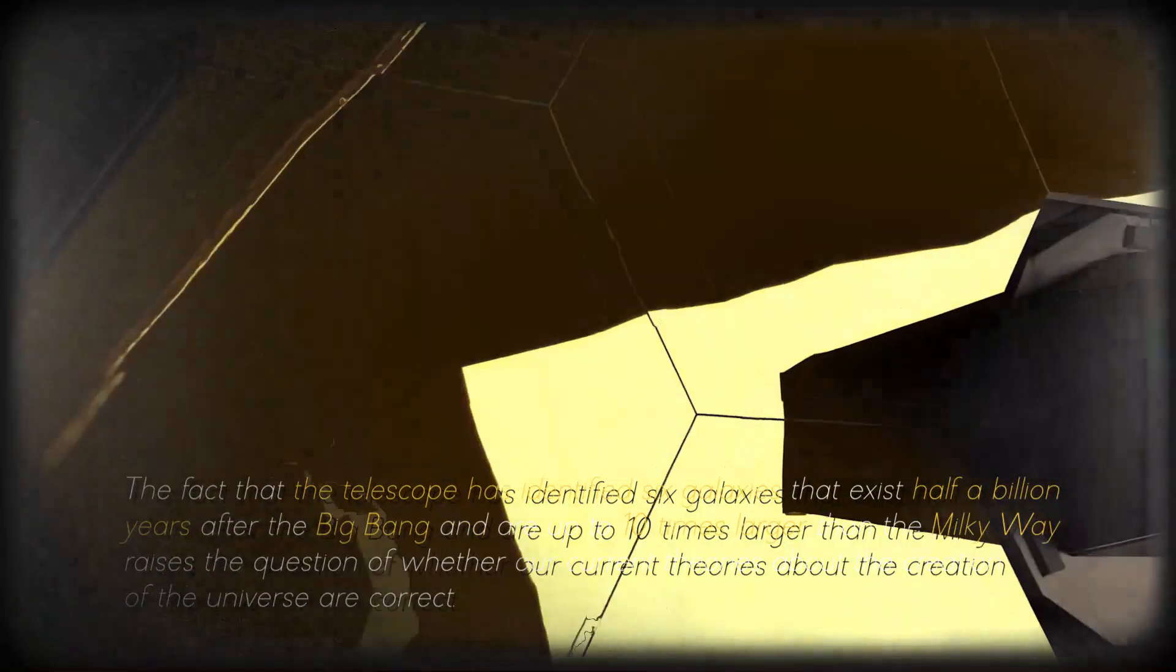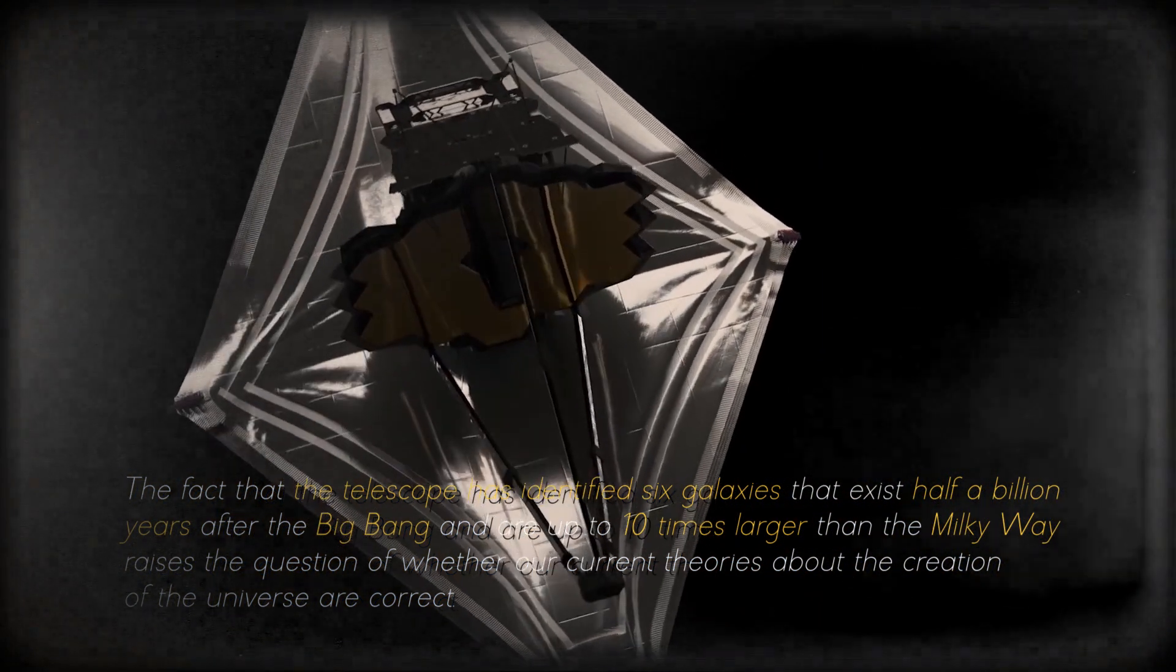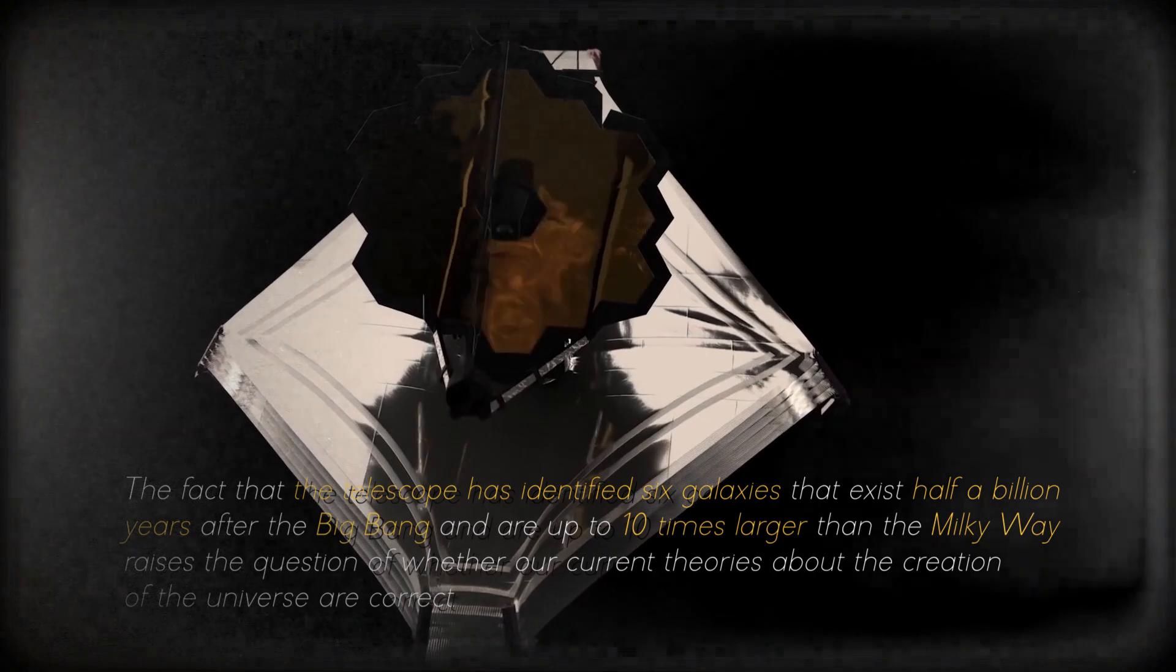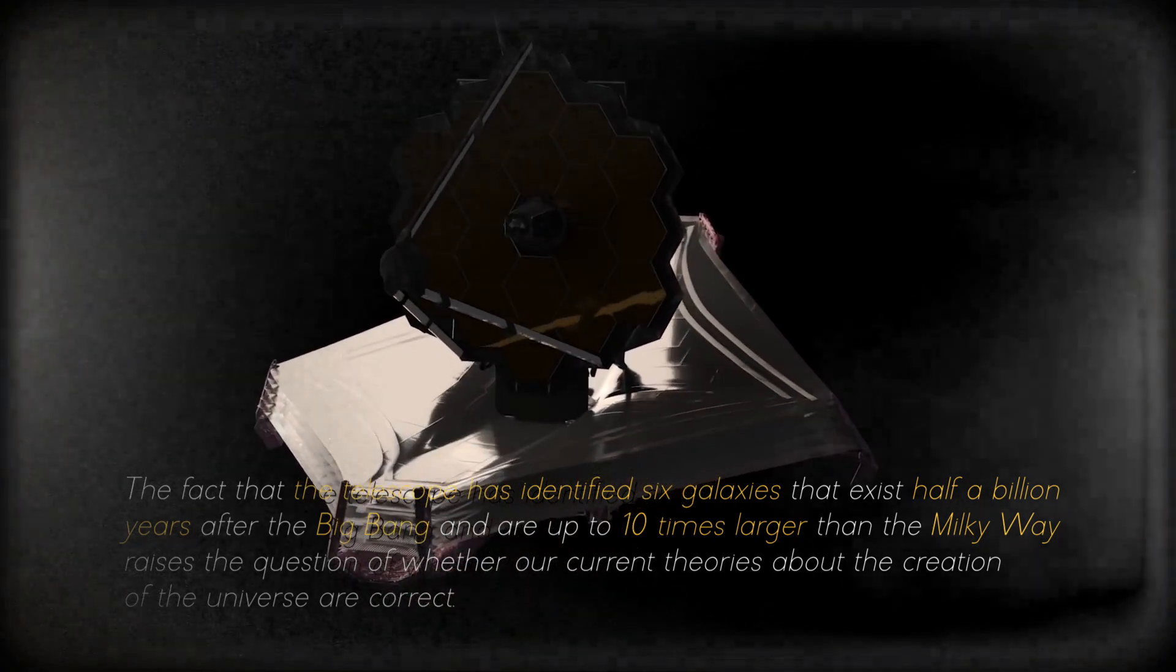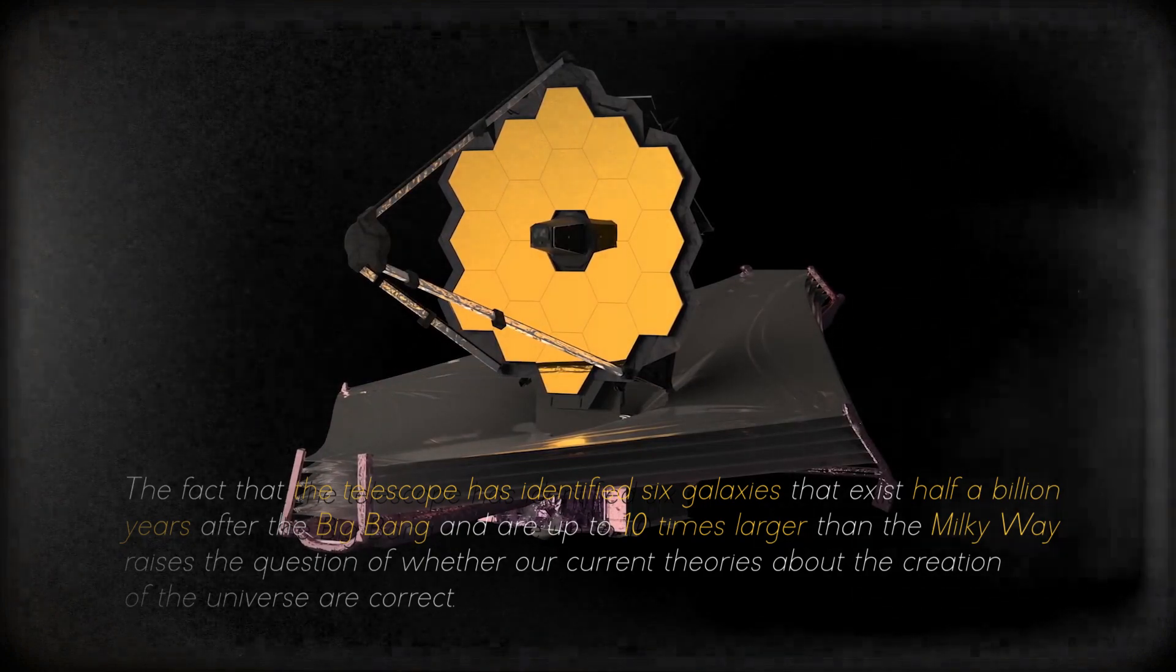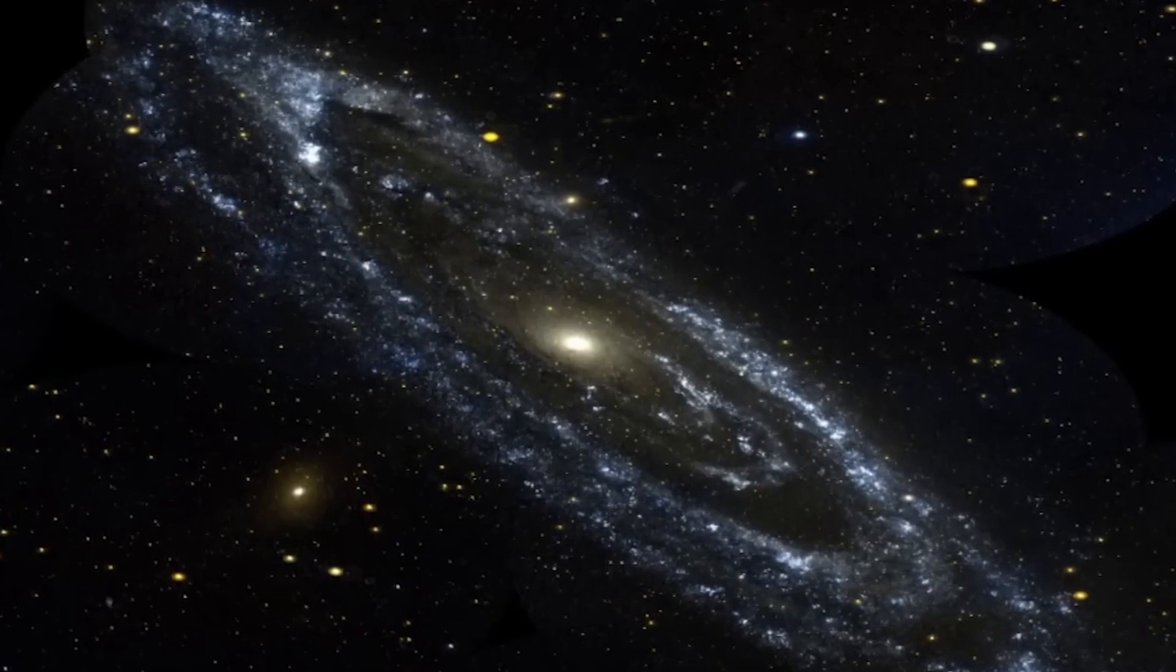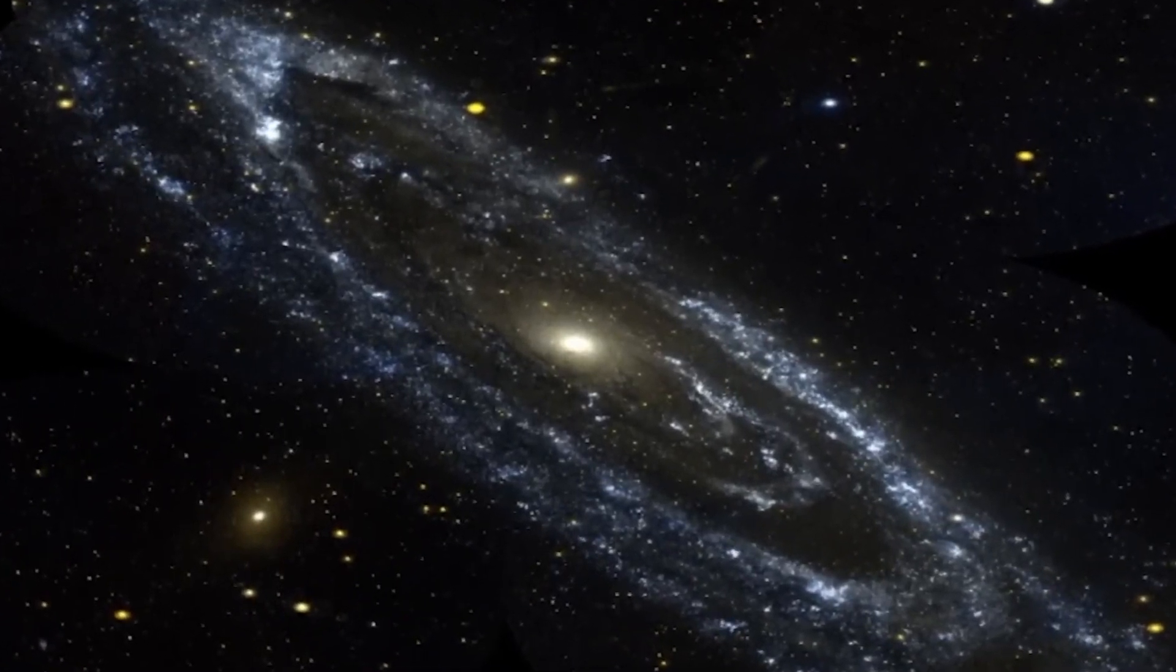The fact that the telescope has identified six galaxies that exist half a billion years after the Big Bang and are up to ten times larger than the Milky Way raises the question of whether our current theories about the creation of the universe are correct. Kaku explained that it takes billions of years to create a galaxy like the Milky Way, so it is strange to find such large, young, primordial galaxies. This discovery may require us to revise and rewrite textbooks on the beginning of the universe.